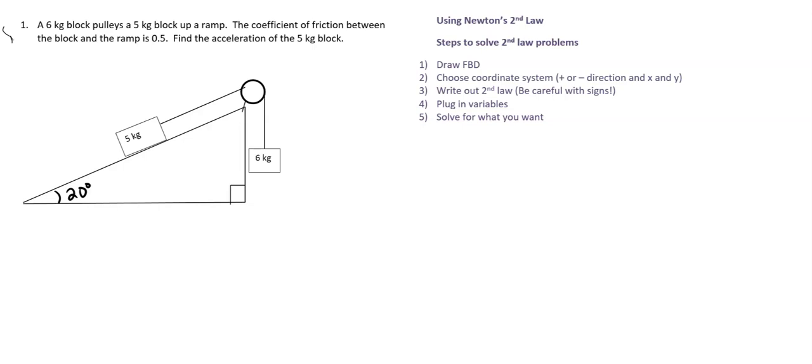Cool. So for this example, we have a 6 kilogram block pulls a 5 kilogram block up a ramp. The coefficient of friction between the block and the ramp is 0.5. Find the acceleration of the 5 kilogram block.